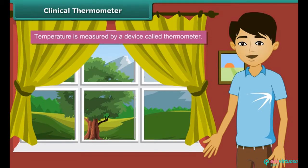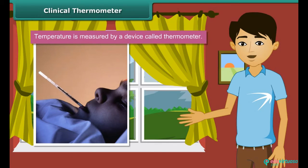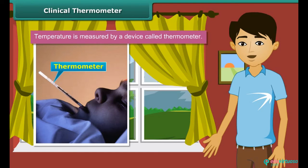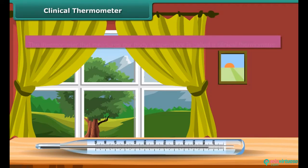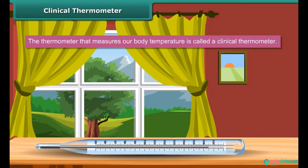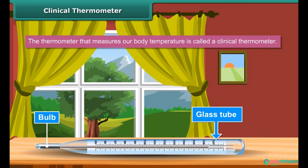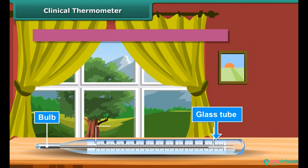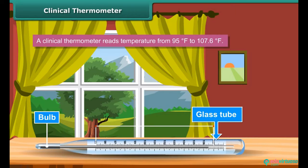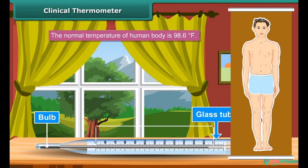Now that we have learnt about temperature, let us look at the device used to measure temperature — it is called a thermometer. The most common use of a thermometer is to measure our body temperature; such a thermometer is called a clinical thermometer. A clinical thermometer consists of a long, narrow, uniform glass tube with a bulb at one end filled with mercury. A small shining thread of mercury can be seen outside the bulb. A clinical thermometer reads temperature from 95°F to 107.6°F. The normal temperature of the human body is 98.6°F. The clinical thermometer is also known as a doctor's thermometer.